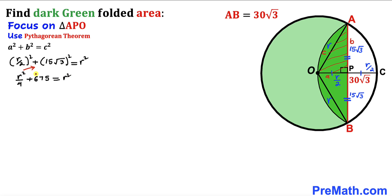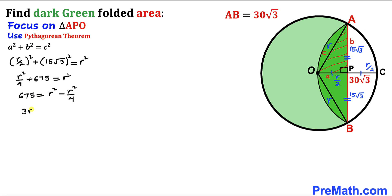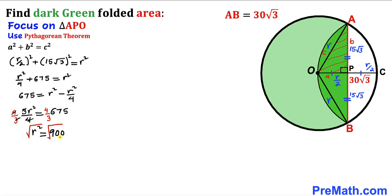Moving r²/4 to the other side: 675 = r² − r²/4, which simplifies to 3r²/4 = 675. Multiplying both sides by 4/3 gives r² = 900. Taking the square root of both sides, our radius r turns out to be 30 units.